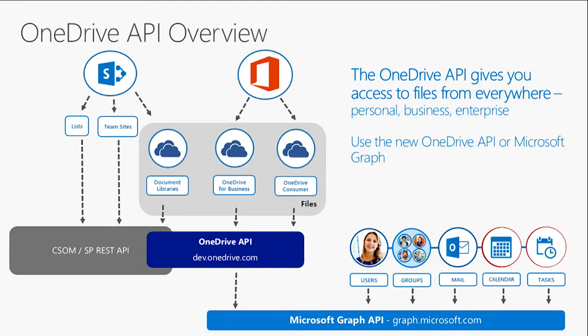In addition, the OneDrive API integrates with the Microsoft Graph, which further simplifies data access and authentication across several different Microsoft endpoints, including users, groups, mail, calendar, and tasks.